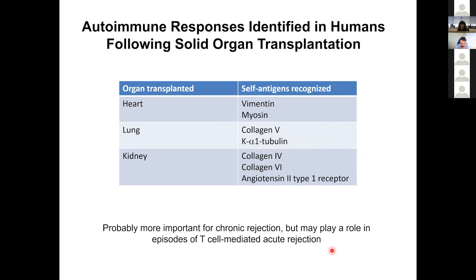In summary, this was an overview of how we think about innate immune priming and licensing of APCs, innate immune activation of T-cells, and direct, indirect, and semi-direct T-cell pathways. Naive T-cells activate in secondary lymphoid organs, go into the graft, recruit innate cells, and potentially cause damage. We discussed the different requirements for naive versus memory T-cells, and the different phases of alloimmunity and autoimmunity — including epitope spreading — that may contribute to rejection. That's all I have for today, and I'm happy to take any other questions.